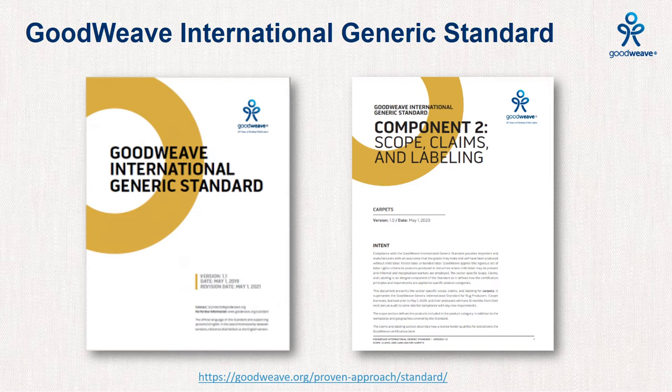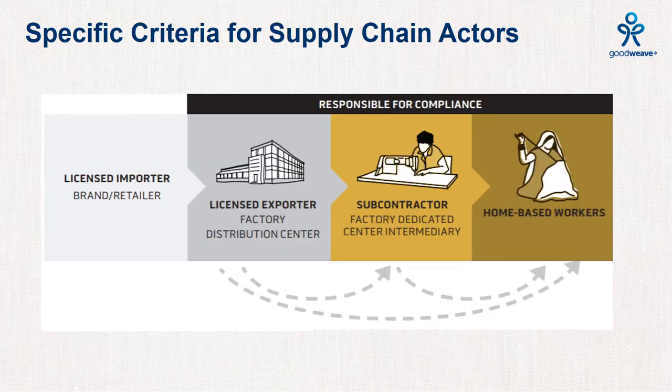Both components of the standard as well as the guidance document are available for download from GoodWeave's website. In the new standard, the certification requirement criteria are now clearly specified for different supply chain actors. The new standard is now quite clear on the expectations for employers of home-based workers as well as the home-based workers themselves. The responsibility for compliance lies with GoodWeave licensed exporters and their subcontractors.